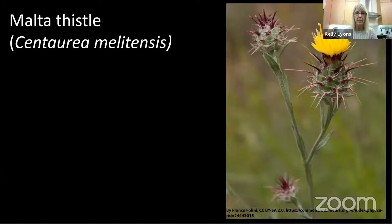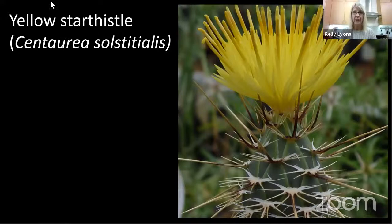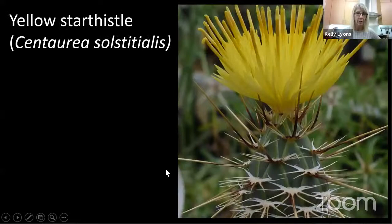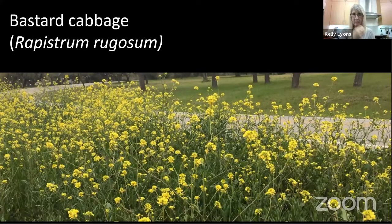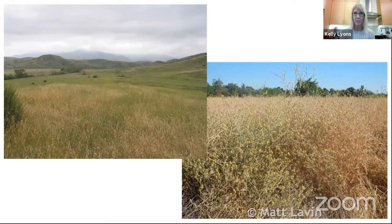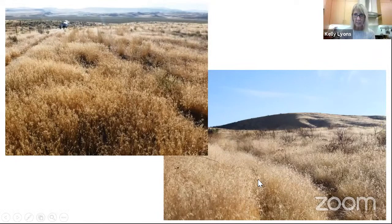Other things coming in behind those grasses include Malta thistle — we actually found some at Hardberger Park and Wendy Leonard did a good job of eradicating it locally. Then there's yellow star thistle, the worst weed ever — if you've been in a field full of it, it is even more spiny than Malta thistle. And bastard cabbage. These are all Mediterranean annual species. Something may be going on with the climate — our winters are getting a little more mild and wet, which is exactly what these Mediterranean species love.